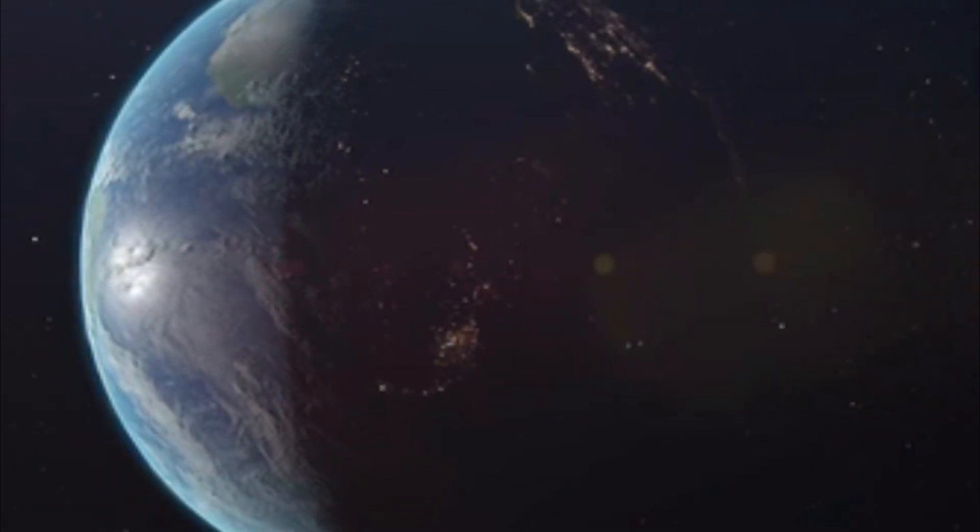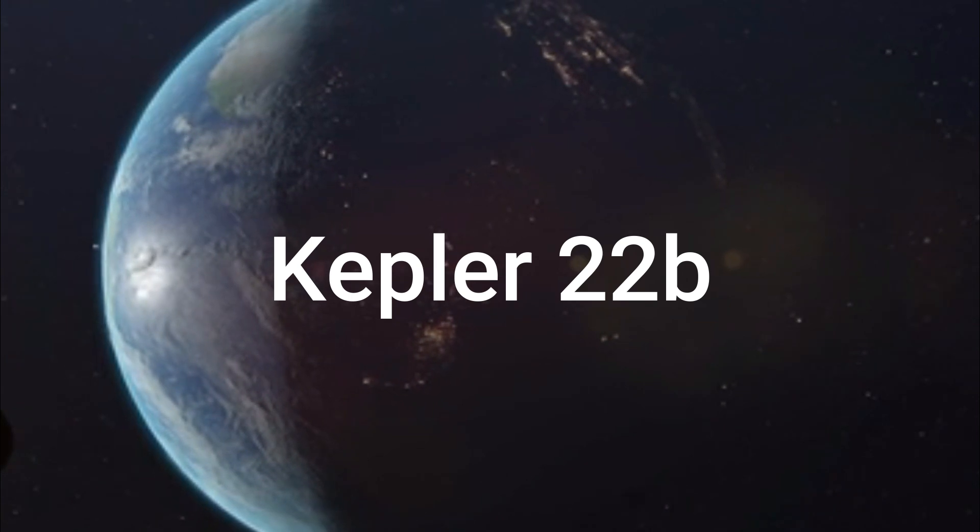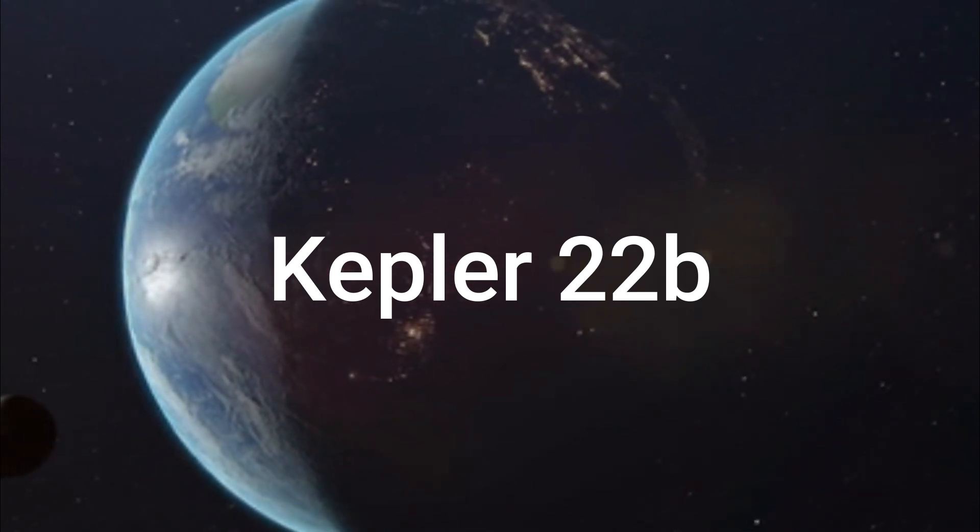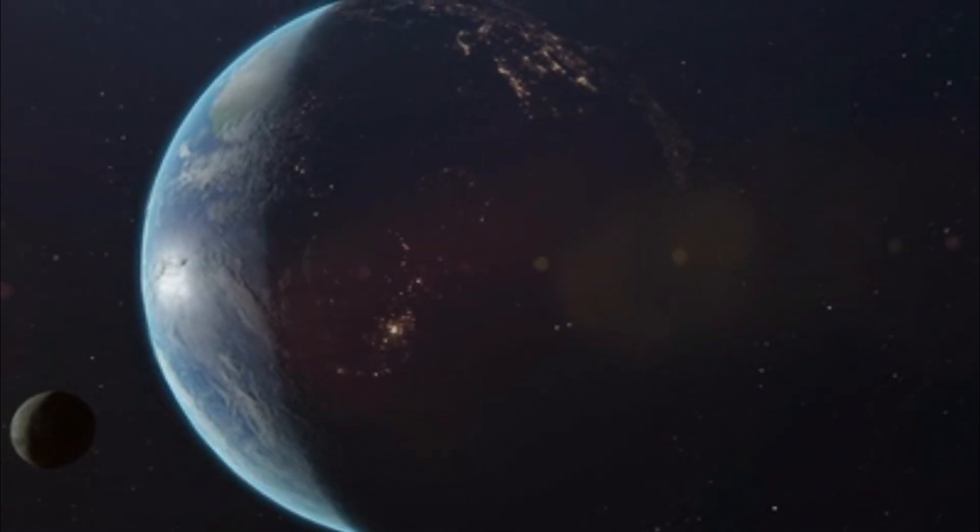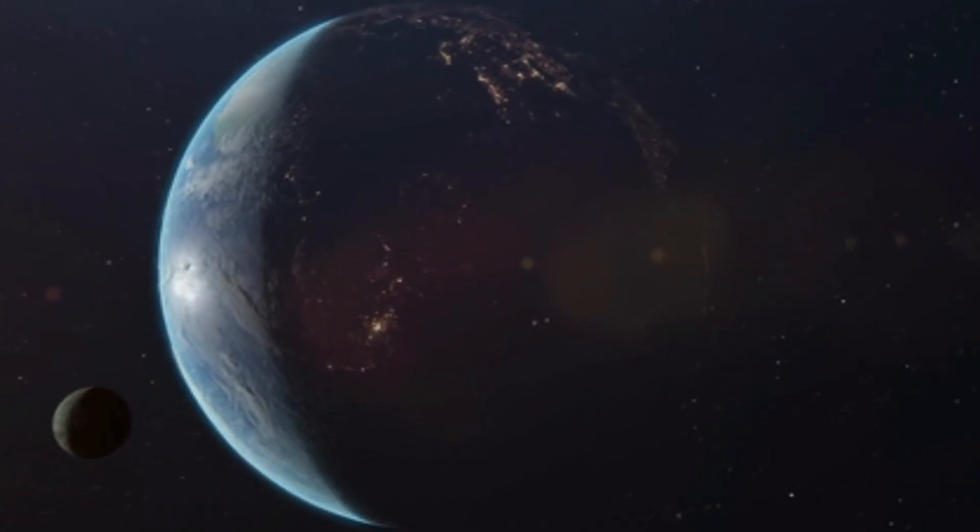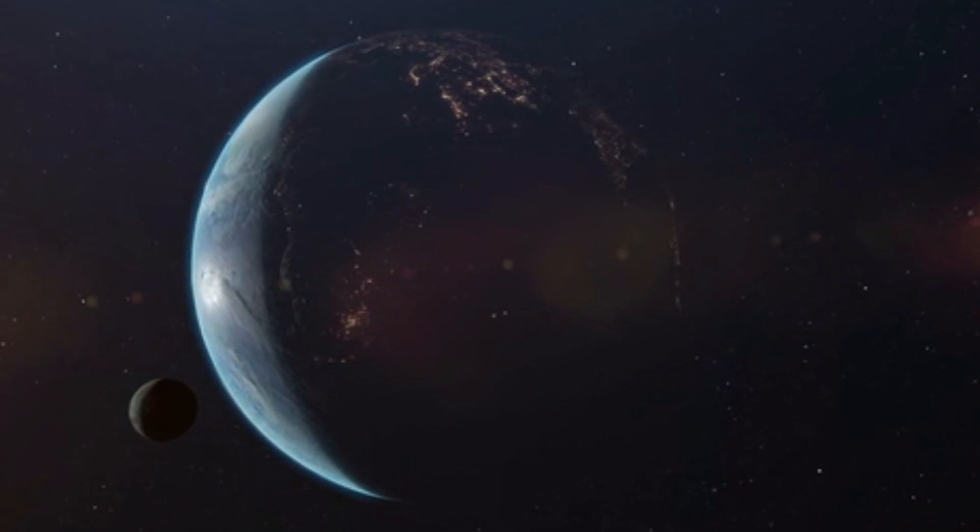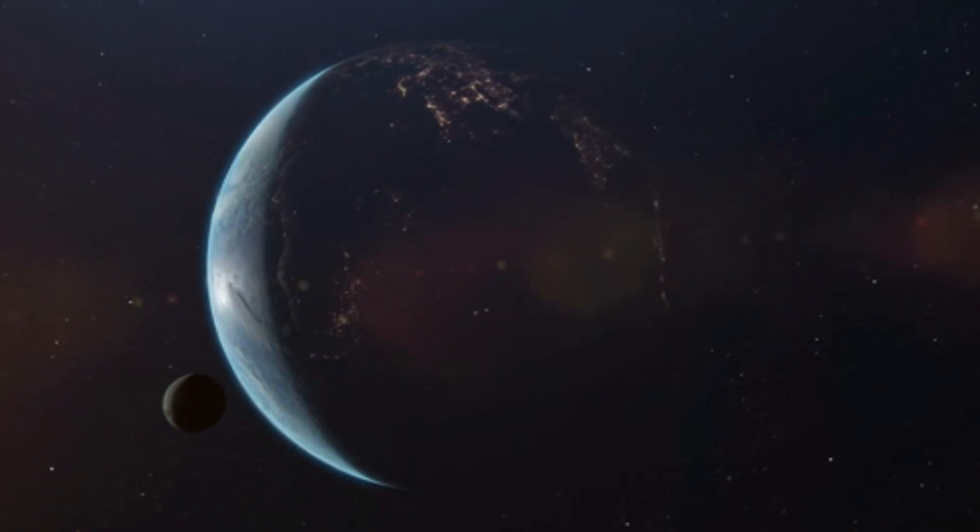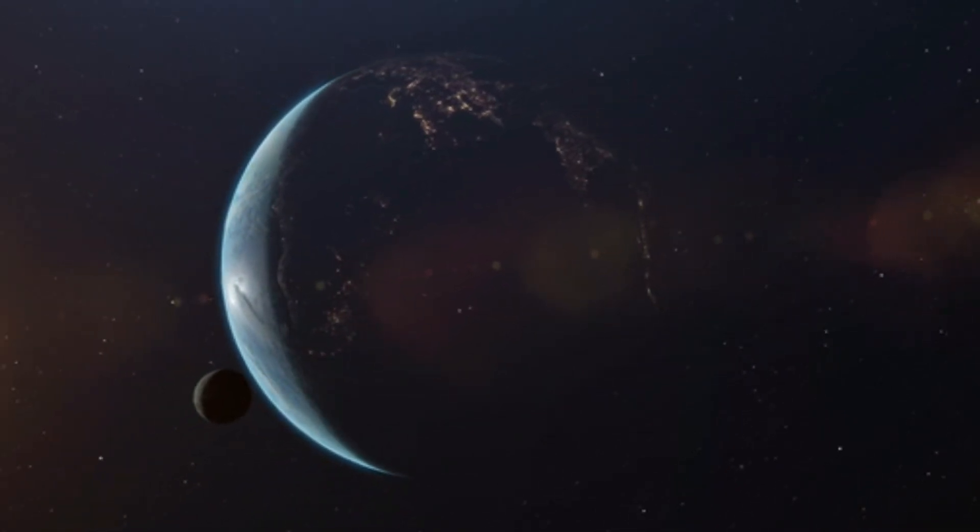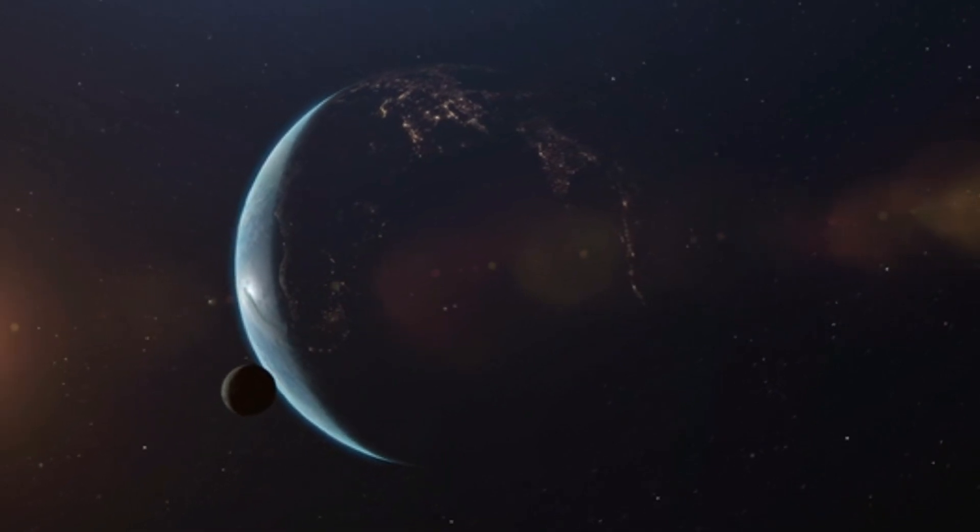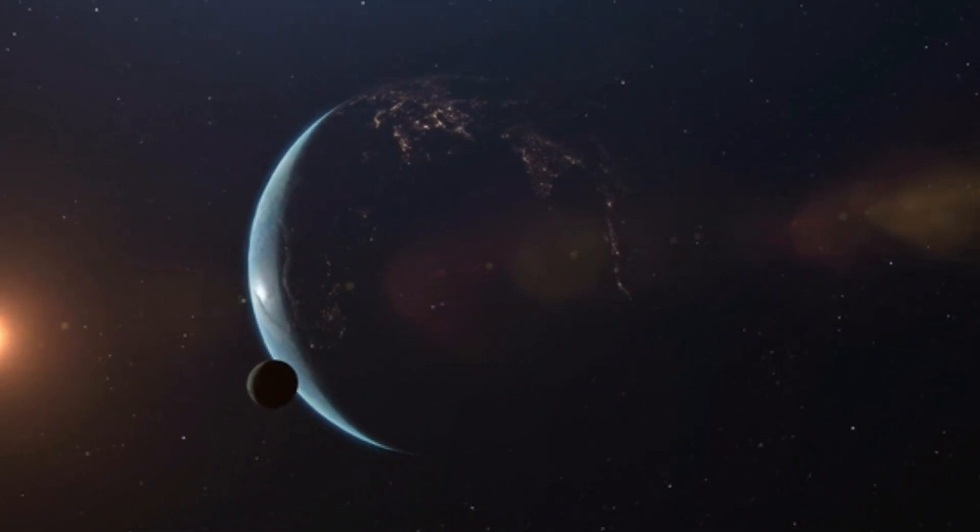In terms of geological activity, Kepler-22b, an exoplanet located about 620 light-years away in the constellation of Cygnus, presents a different set of challenges. Kepler-22b orbits within the habitable zone of its host star, which is similar to the Sun. However, its exact geological characteristics are still unknown.